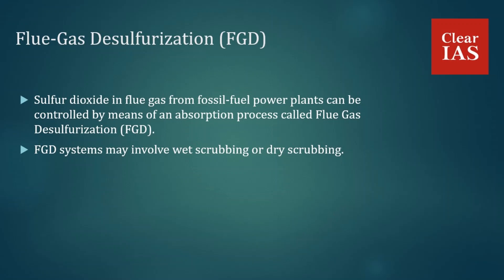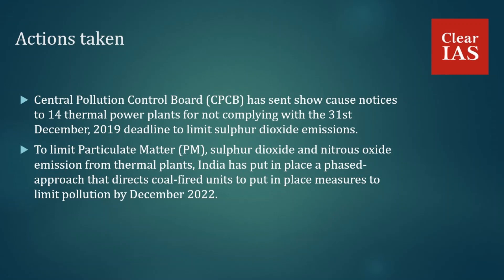The Central Pollution Control Board, CPCB, has sent show-cause notices to 14 thermal power plants for not complying with the December 31, 2019 deadline to limit sulfur dioxide emissions. The CPCB has the power to impose steep fines or shut down units under the provisions of the Environment Protection Act, 1986, to limit particulate matter, sulfur dioxide, and nitrous oxide emissions from thermal plants. India has put in place a phased approach directing coal-fired units to implement pollution-limiting measures by December 2022. As per the Centre for Science and Environment estimates, these norms can help reduce PM emissions by about 35 percent, nitrous oxide emissions by about 60–70 percent, and sulfur dioxide emissions by more than 85 percent by 2026–27.